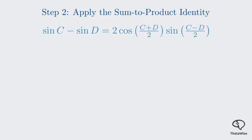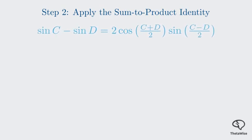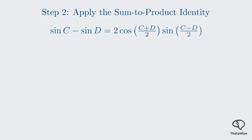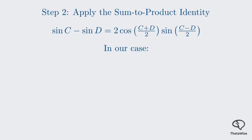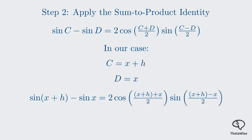The identity we need is sine(a) minus sine(b) equals 2 times cosine((a+b)/2) times sine((a-b)/2). Let me highlight this crucial formula in blue. In our expression, a corresponds to x+h and b corresponds to x, so we let a be x+h and b be x. We can then substitute these into our identity.